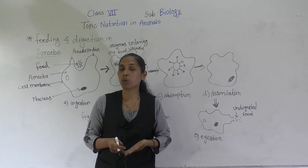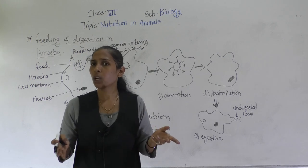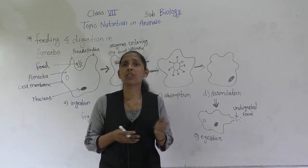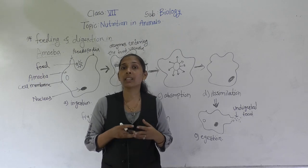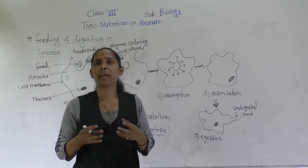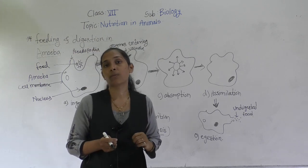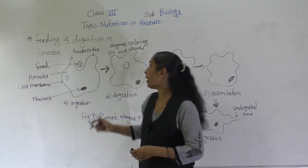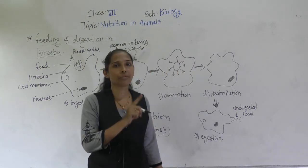Amoeba is a unicellular, microscopic organism which can be found in ponds, lakes, and river water. It continuously changes its body shape by making many finger-like projections, which we call pseudopodia — also called false feet.